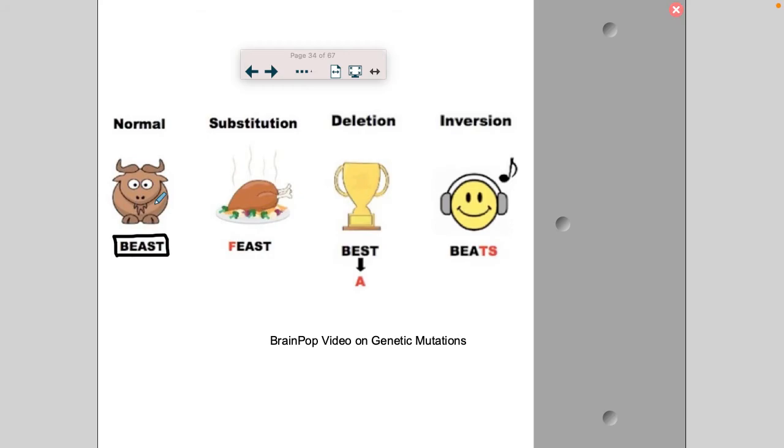FEAST is different from BEAST. Sometimes you have mutations where letters get removed. So on my previous slide here, I removed the A, and everything got shifted over. So now BEAST becomes BEST.